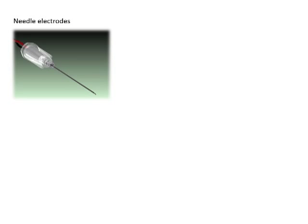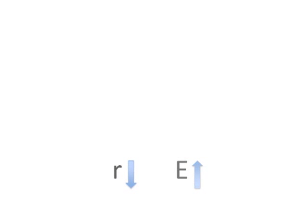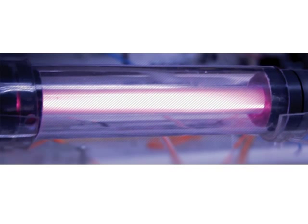Needle electrodes or sharp tips are used to produce a high electric field strength. Electric field strength is proportional to voltage over radius of curvature. Thus, by using a sharp tip with a very small radius, one would not require a very high applied voltage to obtain high electric field strength. When the plasma discharge is initiated between the two electrodes, the medium between them is ionized, creating a plasma channel. The plasma discharge generates ultraviolet radiation and converts surrounding water molecules into active radical species, due to the high energy levels produced by the discharge.